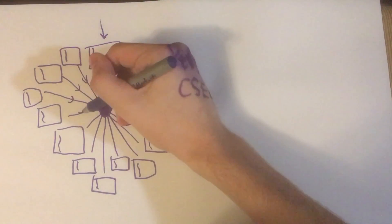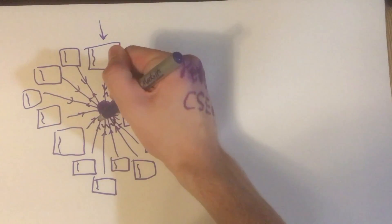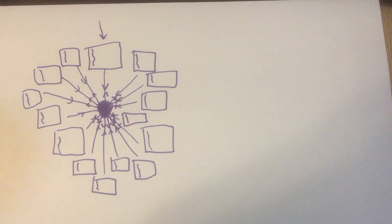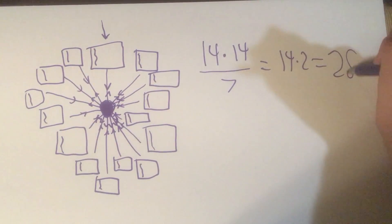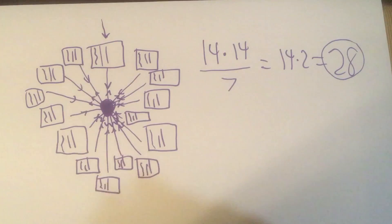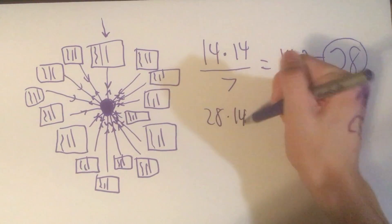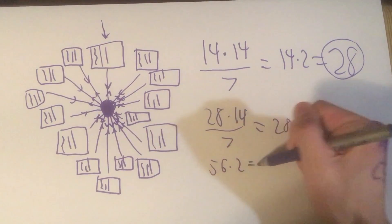Well, now each of the 14 new copies tries to spread itself to the other 14 computers, and each attempt has a 1 in 7 chance of succeeding. Some basic arithmetic shows that we should expect about 28 successes, which means there will be about 28 new worms in the system. And these 28 worms each try to infect the other 14 computers, putting 56 new worms into the system.